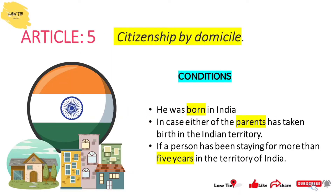Article 5 covers citizenship by domicile and has three conditions — if any one is fulfilled, the person will be an Indian citizen. First, he was born in India. Second, either of his parents was born in Indian territory. Third, the person has been residing in India for more than five years.